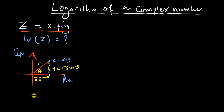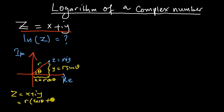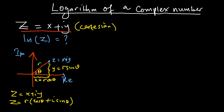So if I write this complex number again as x plus iy, I could also write it as r cosine theta plus i sine theta. We call x plus iy the Cartesian form of the complex number, and r(cosθ + i sinθ) the polar form of the complex number.